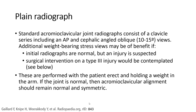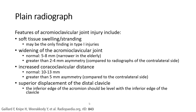If the joint is normal, the acromioclavicular ligament should remain normal and symmetric. Features of an acromioclavicular joint injury include soft tissue swelling, widening of the acromial joint — normally 5 to 8mm — compared to radiographs of the contralateral side. Increased coracoclavicular distance, normal 10 to 13mm, greater than 5mm asymmetry compared to the contralateral side. Superior or inferior displacement of the distal clavicle below the inferior edge of the acromion to the level of the inferior edge of the clavicle.